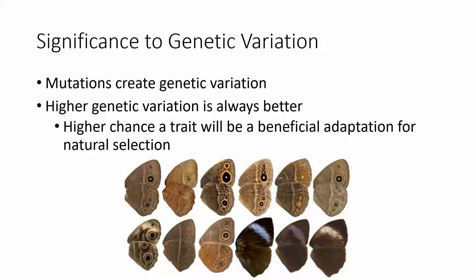If you have a really dark environment with dark stuff on the trees, the darker moths may be the ones that survive. If you've got light-colored trees, but a moth's wing pattern looks like a pair of eyeballs from a predator, that could scare away something that would have otherwise eaten that moth. So once again, the genetic variation allows for the possibility of adaptation.